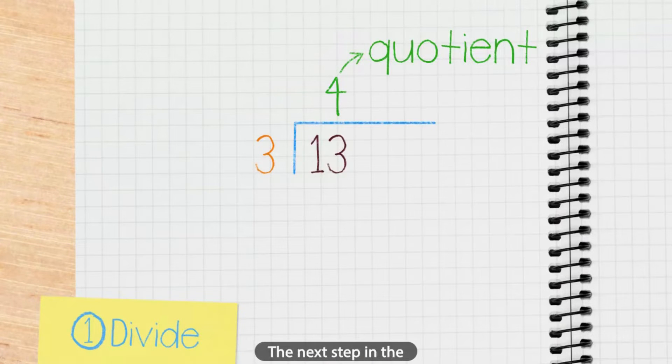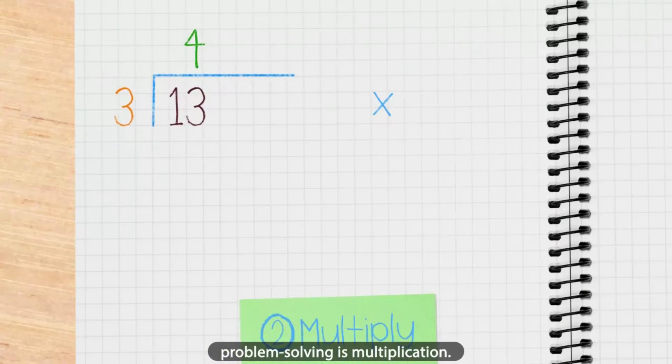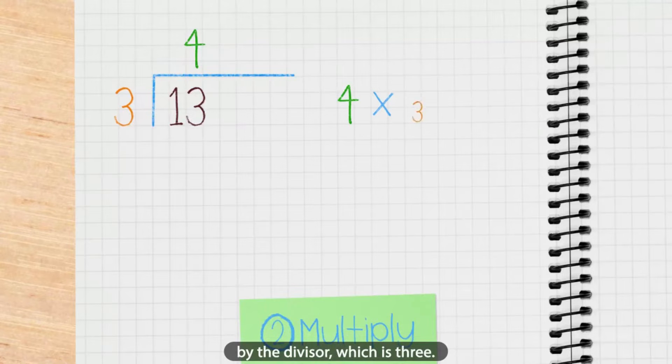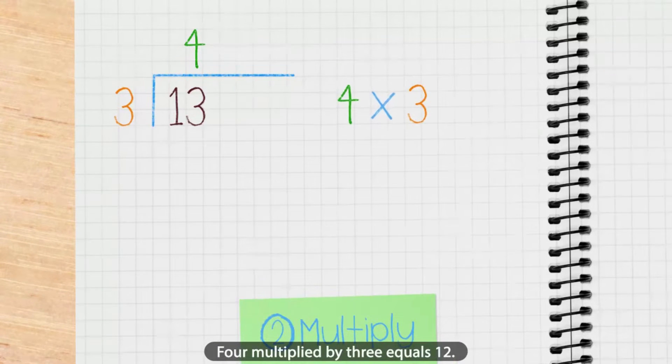The next step in the problem solving is multiplication. Multiply the quotient, which is 4, by the divisor, which is 3. 4 multiplied by 3 equals 12.